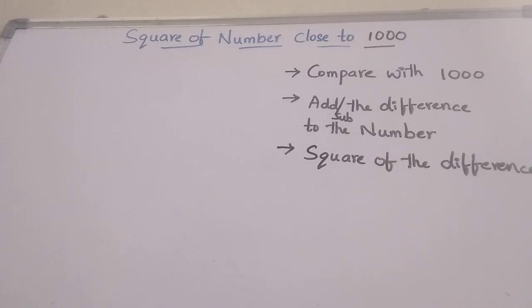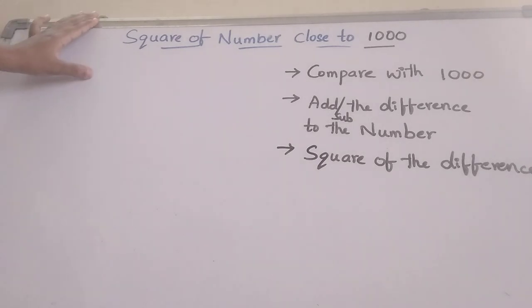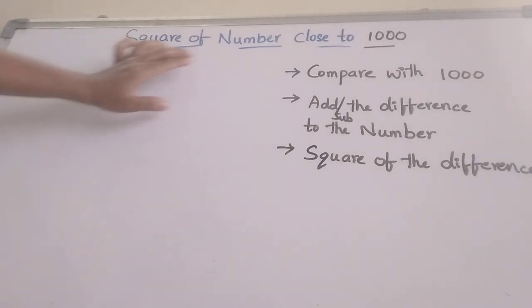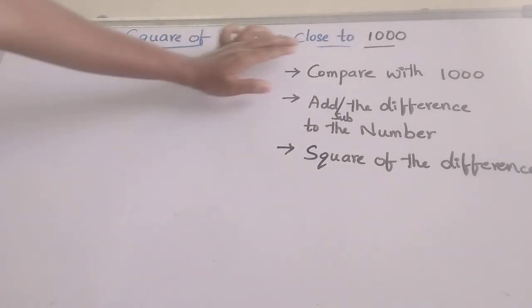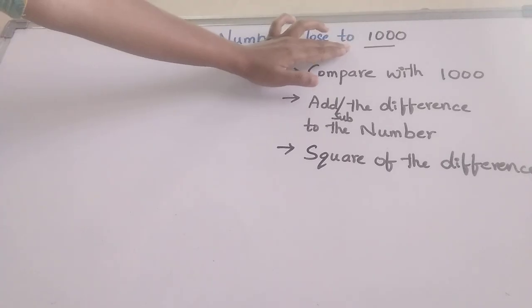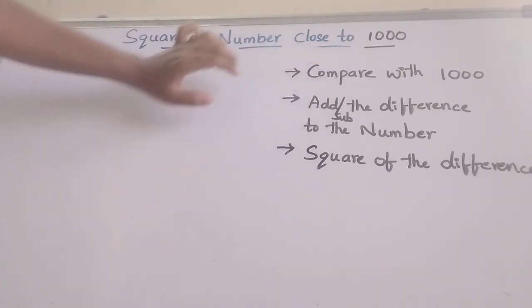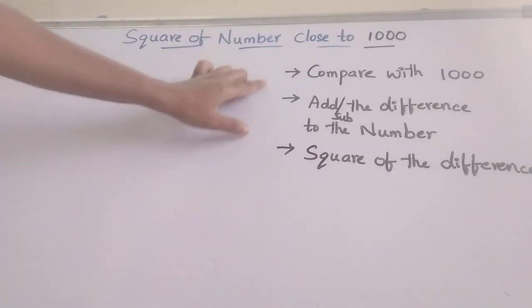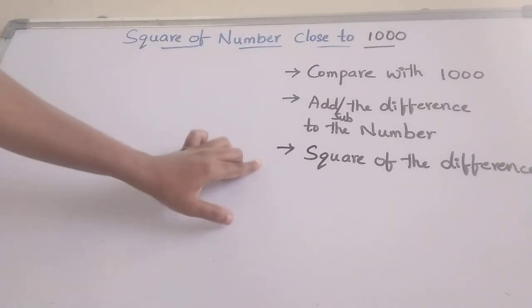Hello everyone, welcome back to session 4. In this video we have one more trick — we can find the square of a number that is close to 1000. For this we have only 3 steps.